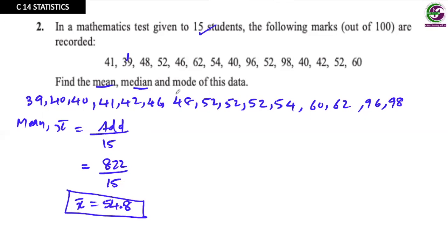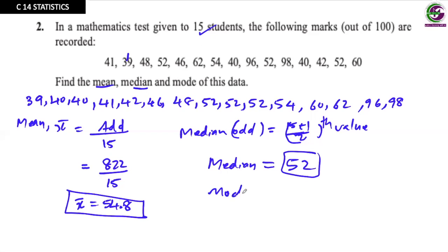Next, we have to find median, which is the middle value. It is easy here because it is an odd value. So it will be 15 plus 1 divided by 2, which is 16 by 2, eighth value. Counting 1 through 8, the median is 52. And mode is the most repeated value. Here, 52 is most repeated. So we get mode as well. We can see all the averages come around a specific value.